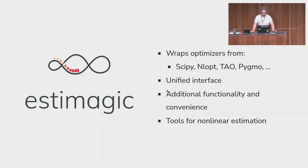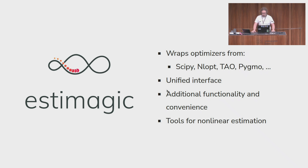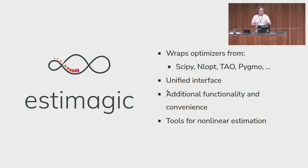This is basically where SDMagic comes in. SDMagic grew out of my frustration with existing tools — we started about three years ago. What SDMagic does is wrap the optimizers from many major optimization libraries in Python: all algorithms from scipy, from nlopt, from the Toolkit for Advanced Optimization, and from pygmo, plus many others. It gives all these algorithms a unified interface that is very scipy-minimize-like, but we don't just take the common denominator — we really add additional functionality.